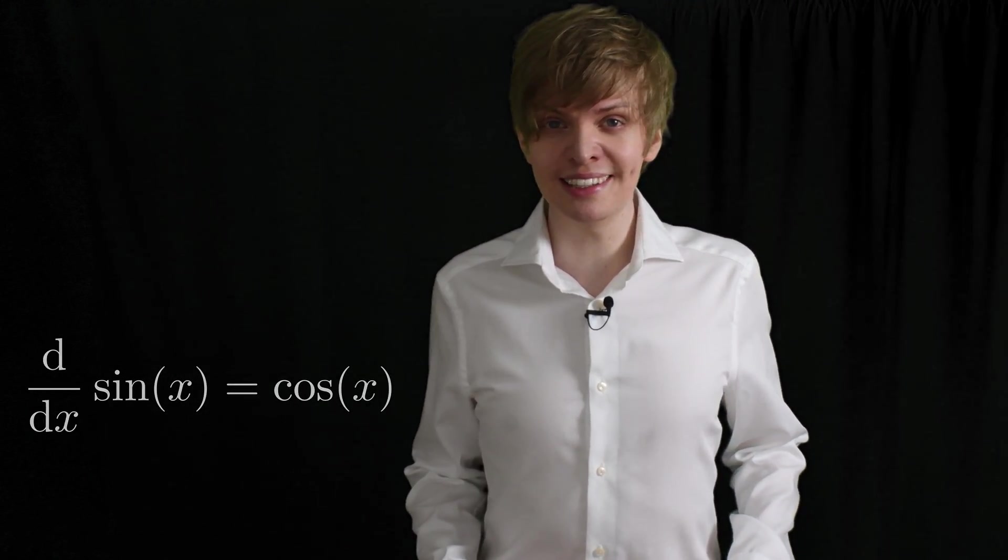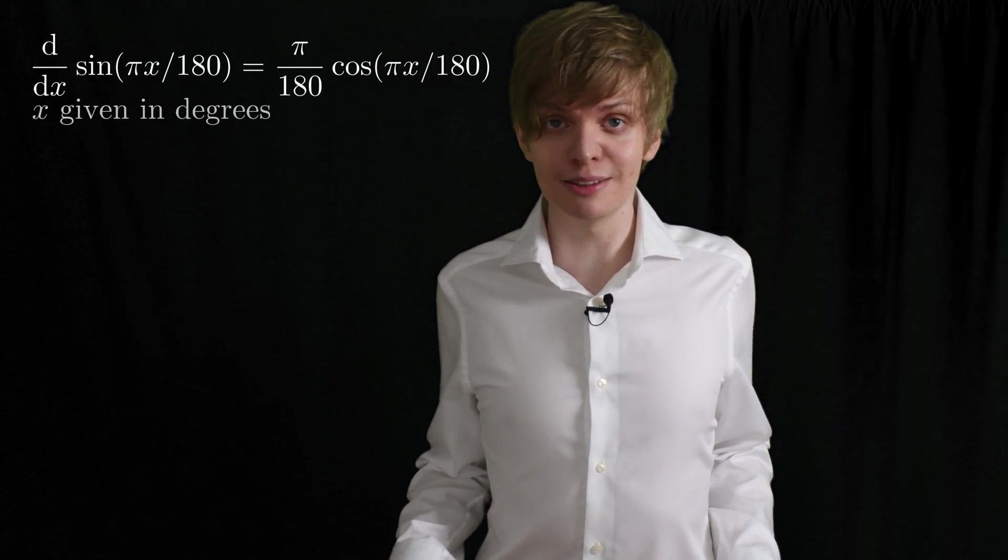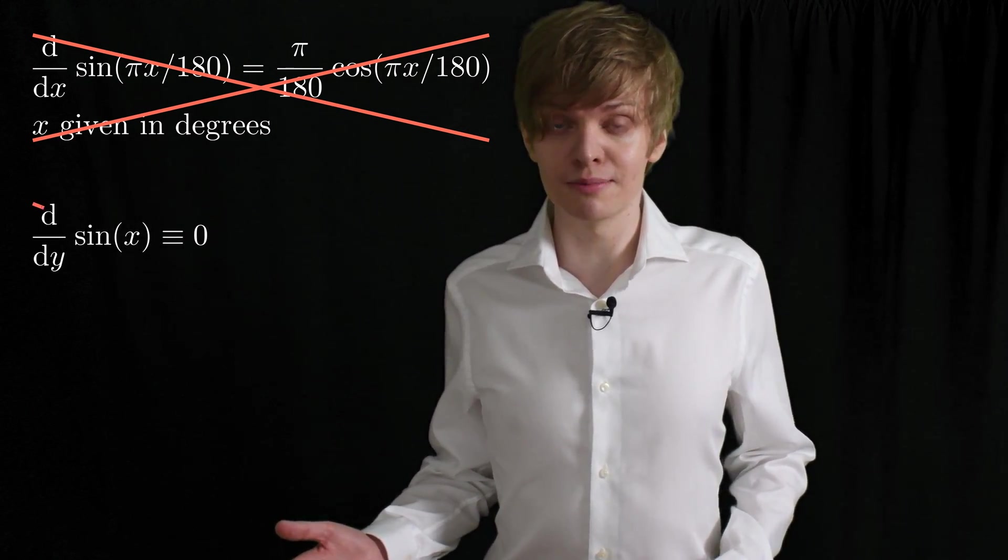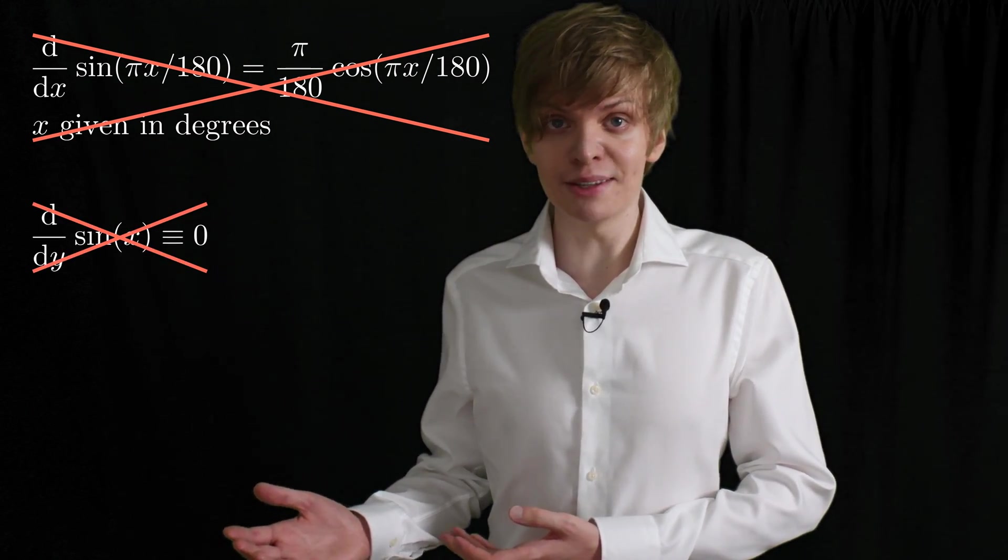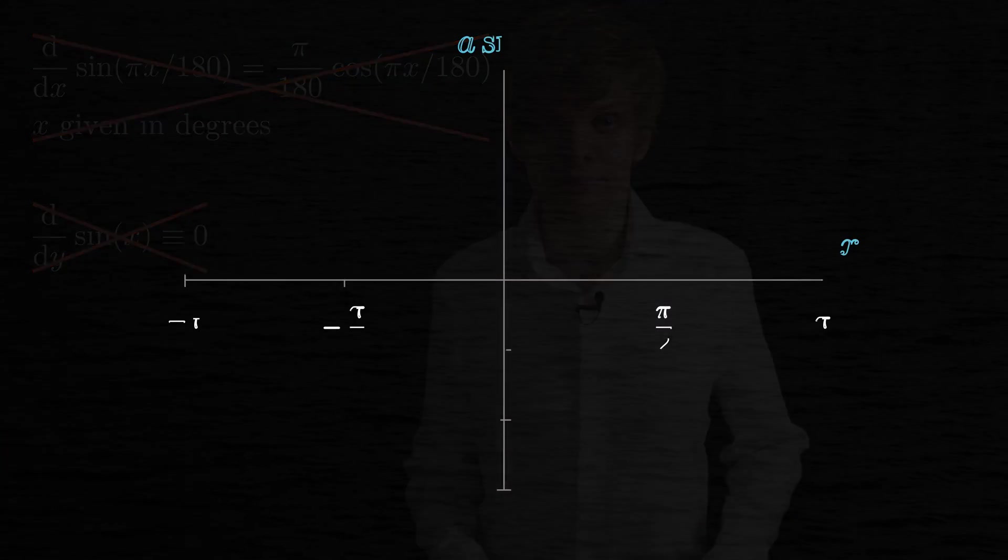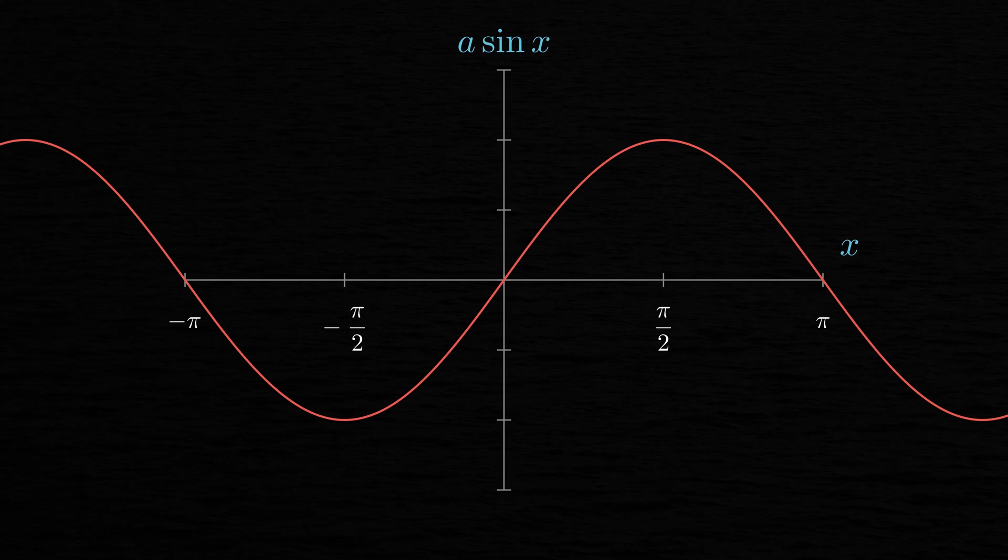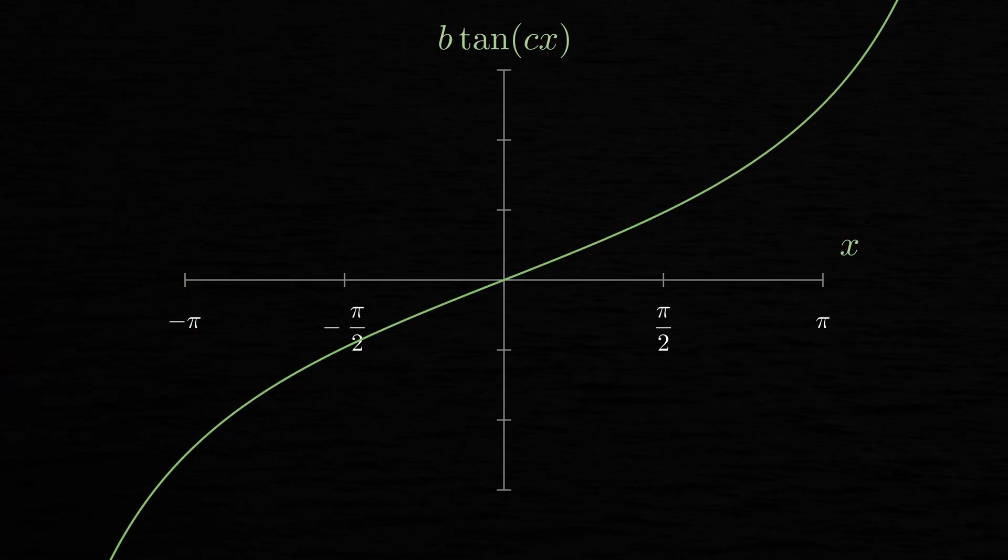As you might recall from high school, the derivative of the sine of x is the cosine of x. Or is it really? Well, yes, of course it is, at least if the angle x is given in radians and if we take the derivative with respect to x. But hear me out. I'm going to explain how you can start with a sine function, take the derivative, and get a tangent function.